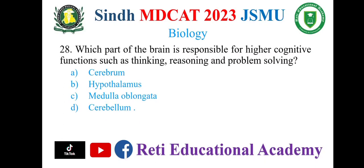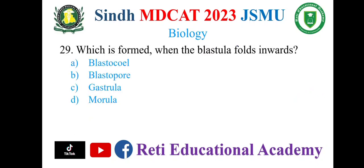Which part of the brain is responsible for higher cognitive functions such as thinking, reasoning, and problem solving? A. Cerebrum, B. Hypothalamus, C. Medulla oblongata, D. Cerebrum. The correct option is A. Cerebrum. Question number 29.